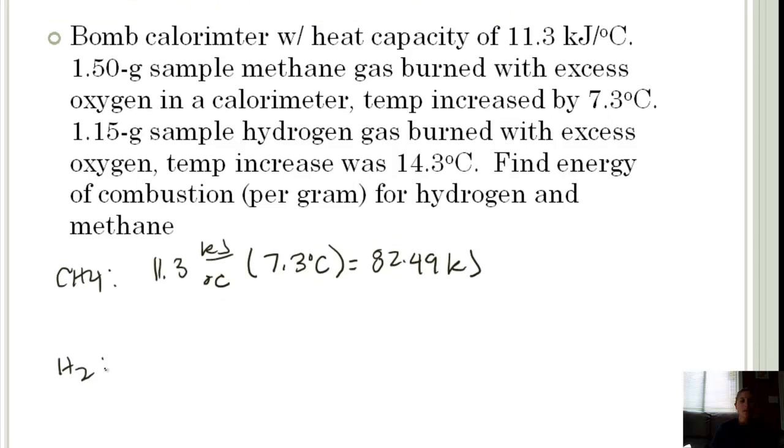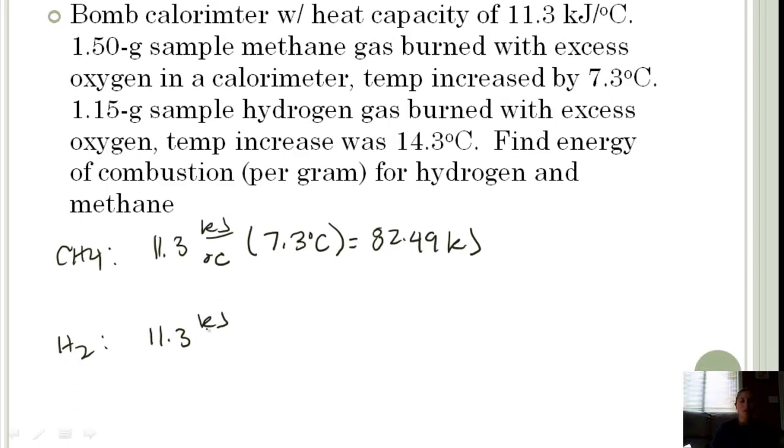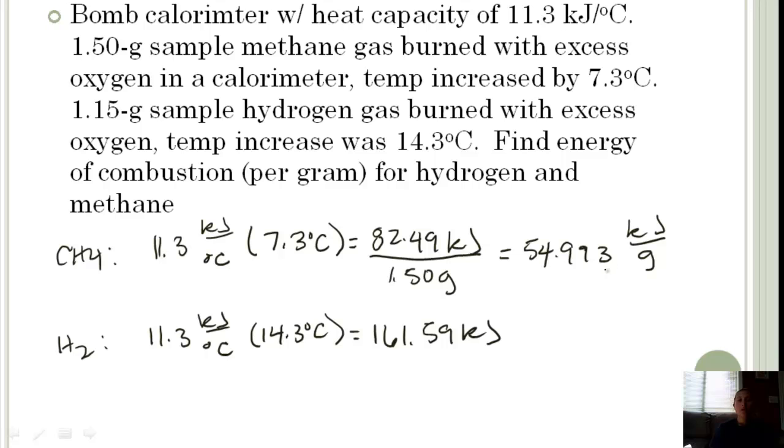You're going to do the same thing for H2. Same calorimeter, so same heat capacity, different change in temperature however. If you multiply those together, we get 161.59 kilojoules. We want kilojoules per gram. I know that I put in the calorimeter 1.50 grams of methane. If I divide those, I'm going to get 54.993 kilojoules per gram. Let's do significant figures. It looks like we've got 7.3, so let's go with 2. So we've got 55 kilojoules per gram.